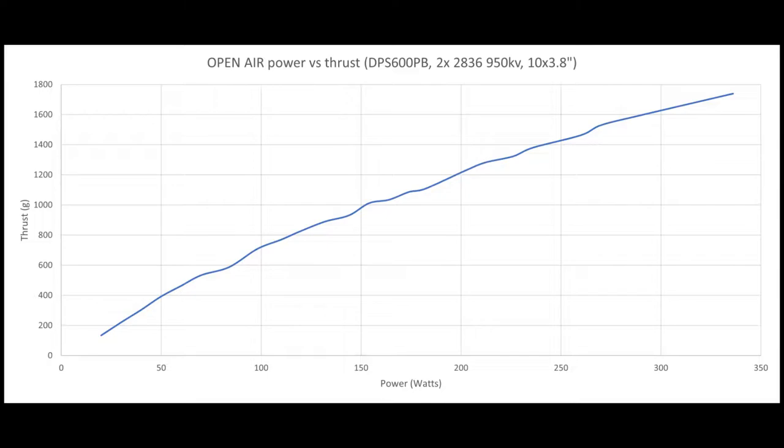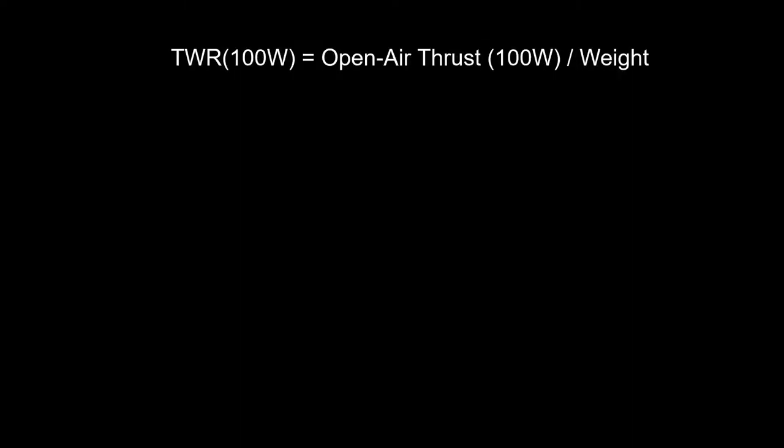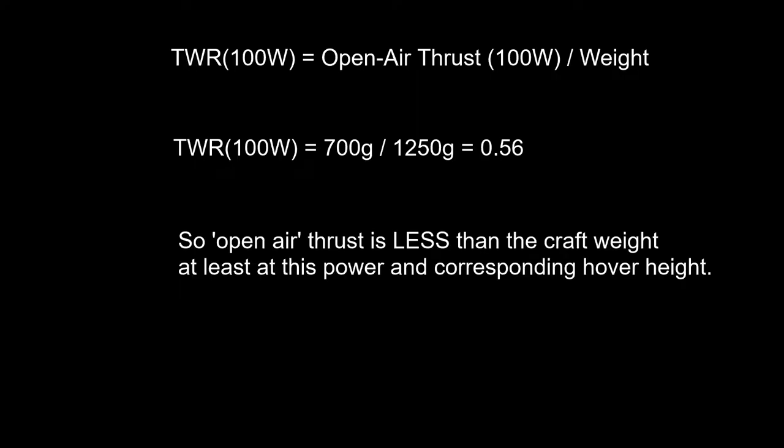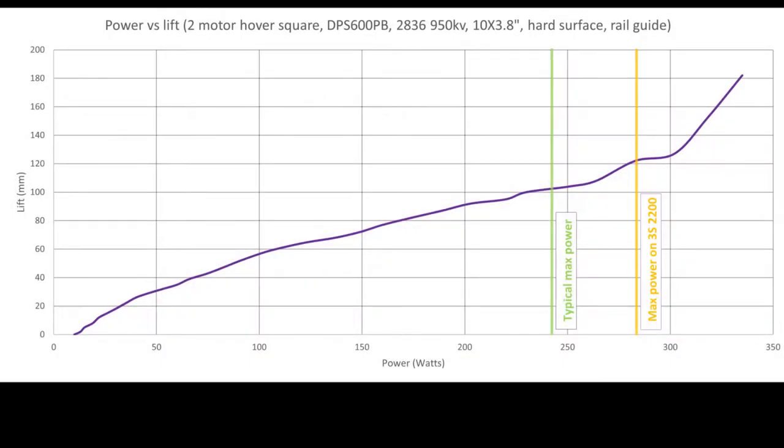So what we can do now is work out the thrust to weight of two motor hover square. For example, at 100 watts, the open air thrust is about 700 grams. Being that the craft weighs 1250, your thrust to weight is around about 0.6 in that ballpark. So at least at that height, we can say it is in fact producing less thrust than its weight. So the ground isn't just a stabilizer. There is actually an advantage to this. And the multirotor at thrust to weight of 0.6 isn't doing anything.